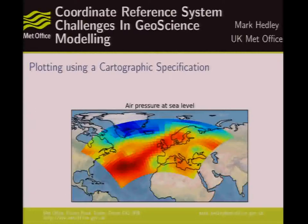This is an example of a limited area numerical model that we've plotted. This is plotted over a standard Plate Carrée projection, and you can see that the model domain is a slightly interesting shape. I've plotted each one of the cells individually on this model — it's quite a coarse model.